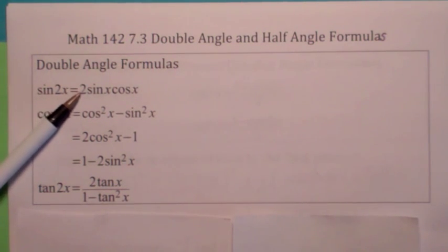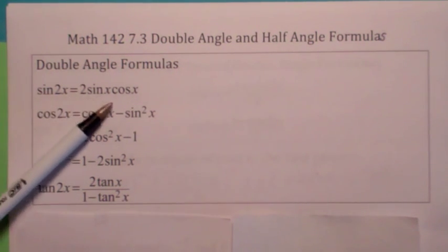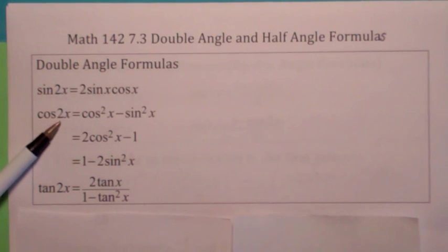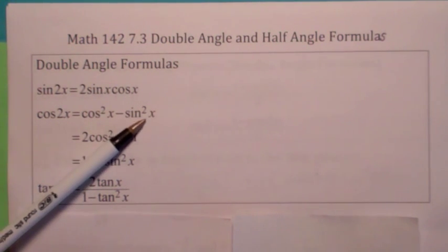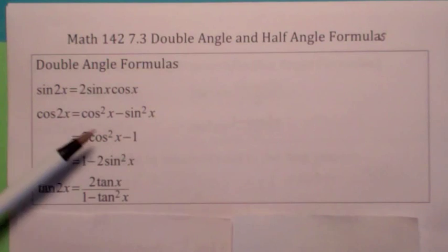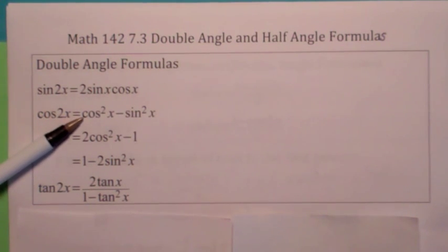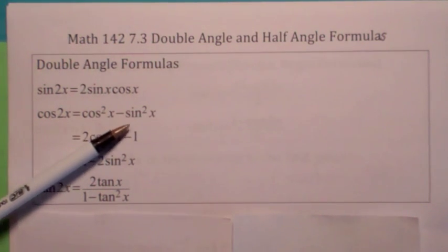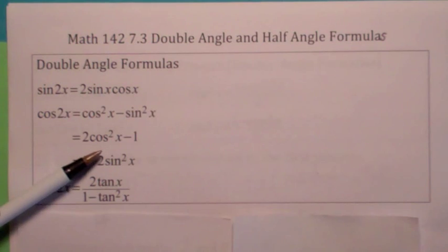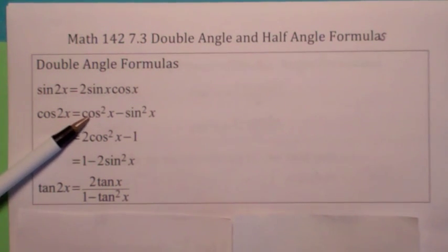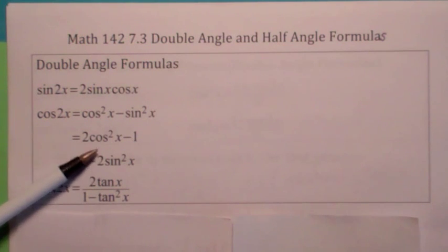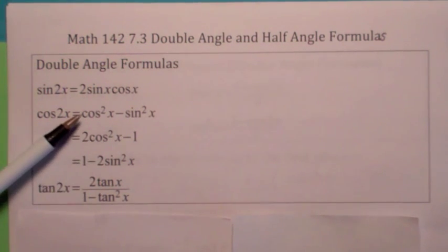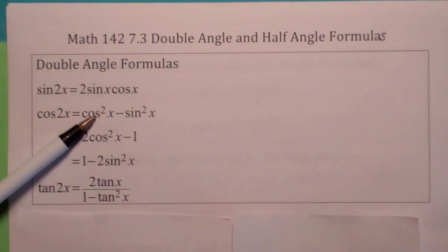Sine of twice an angle is 2 times the sine of the angle times the cosine of the angle. The cosine of twice an angle is the cosine squared of the angle minus the sine squared of the angle. And if you apply the Pythagorean Theorem — replacing sine squared with 1 minus cosine squared, or cosine squared with 1 minus sine squared — you get the other two variations of the cosine double angle formula.